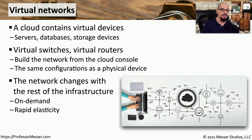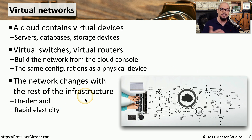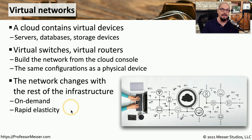Unlike our physical devices, our cloud-based networking systems can be created virtually at any time. We can use on-demand functionality to go to a single console, configure as many different switches as we would like, and instantly have a new network infrastructure created. We can combine this with rapid elasticity so our applications can automatically create new instances, and with those new instances come virtual switches and virtual routers along with all of the other cloud-based systems.